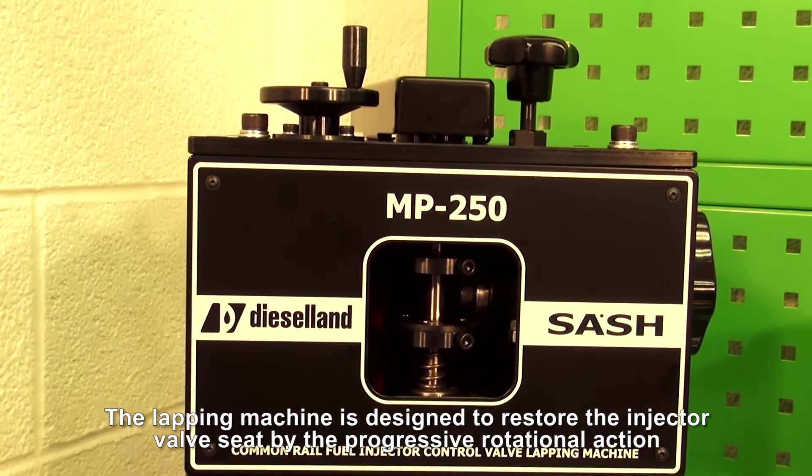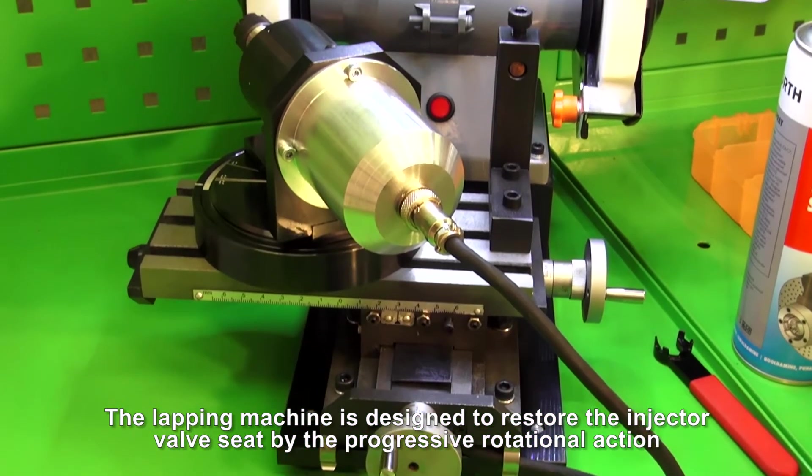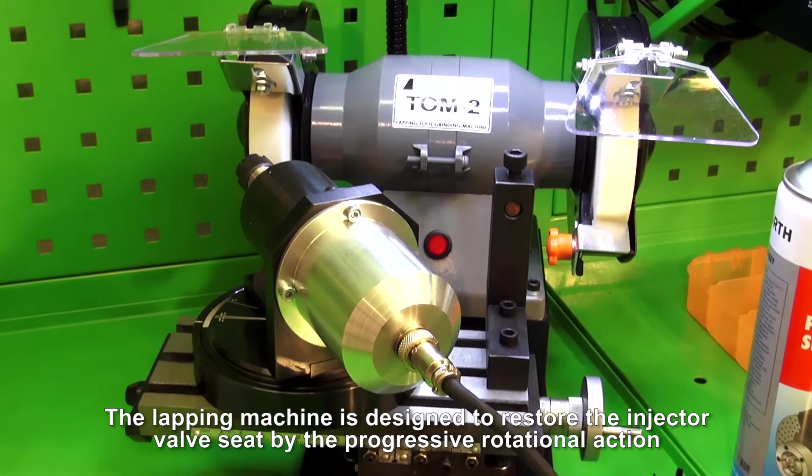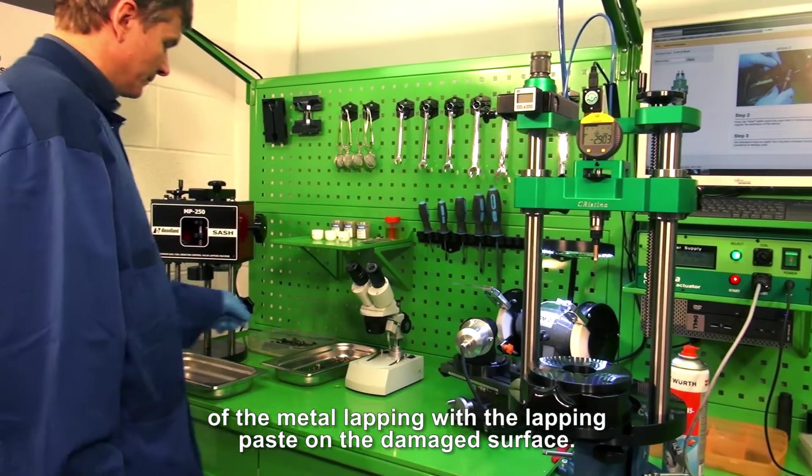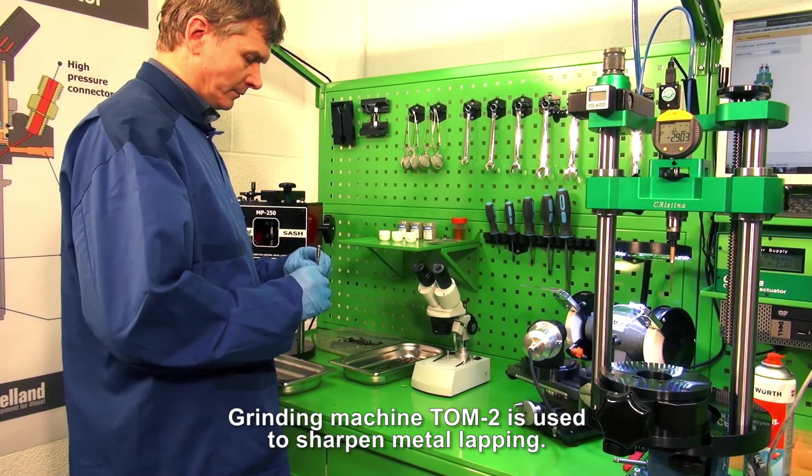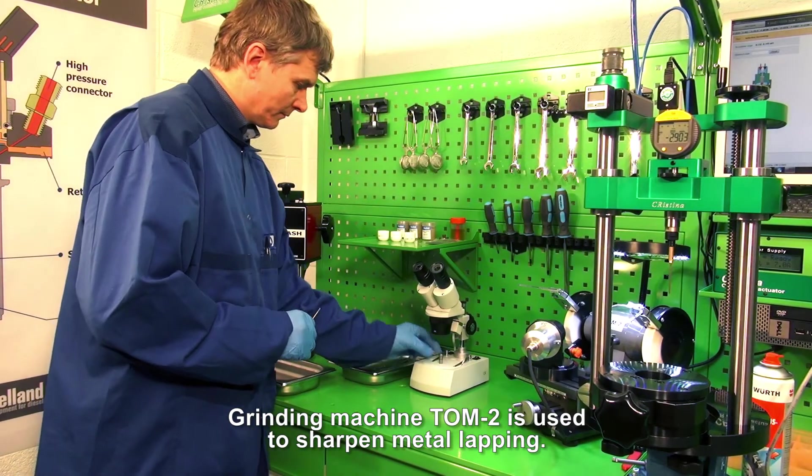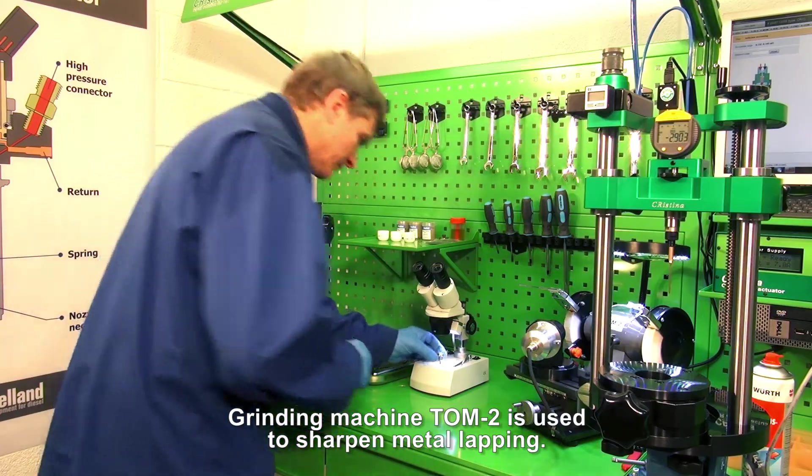The lapping machine is designed to restore the injector valve seat by the progressive rotational action of the metal lapping with a lapping paste on the damaged surface. Grinding machine TOM2 is used to sharpen metal laps.